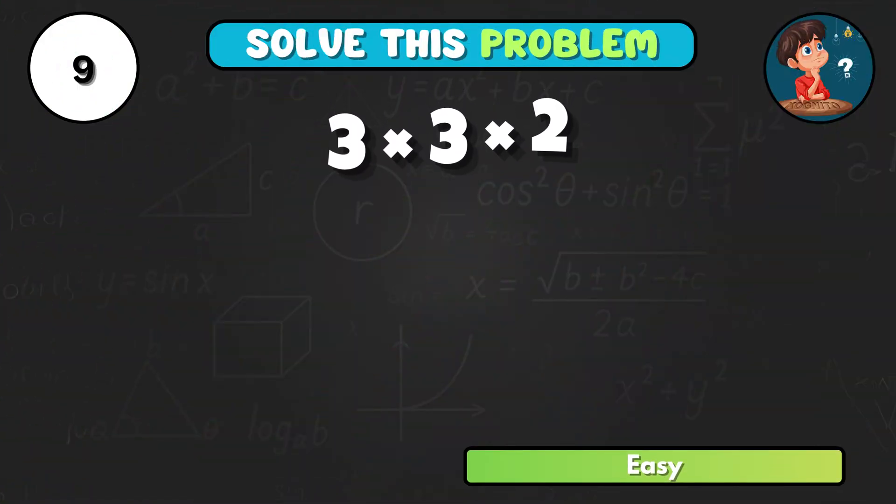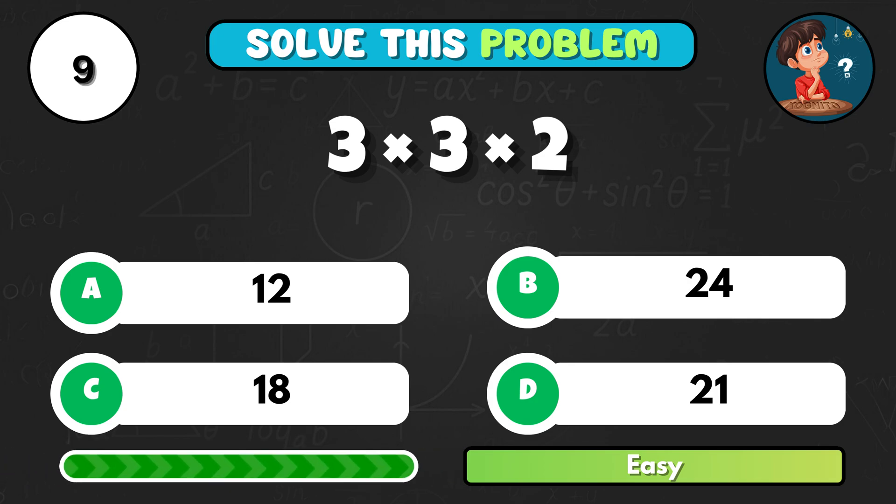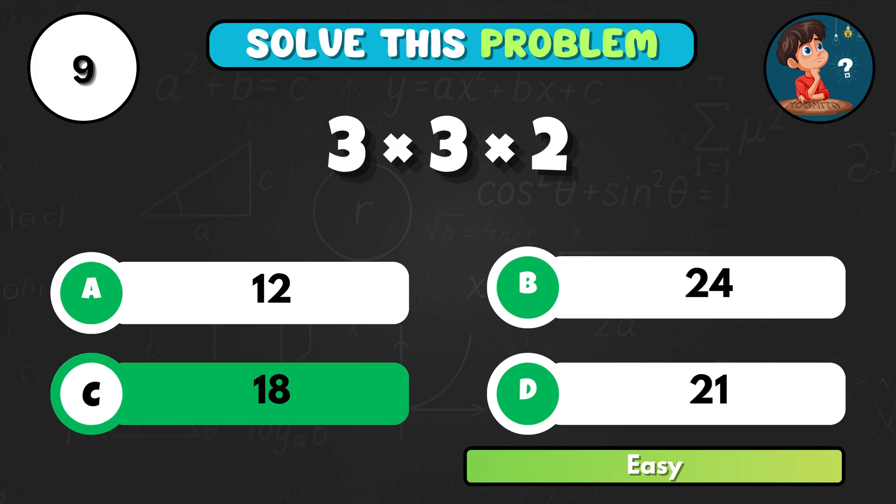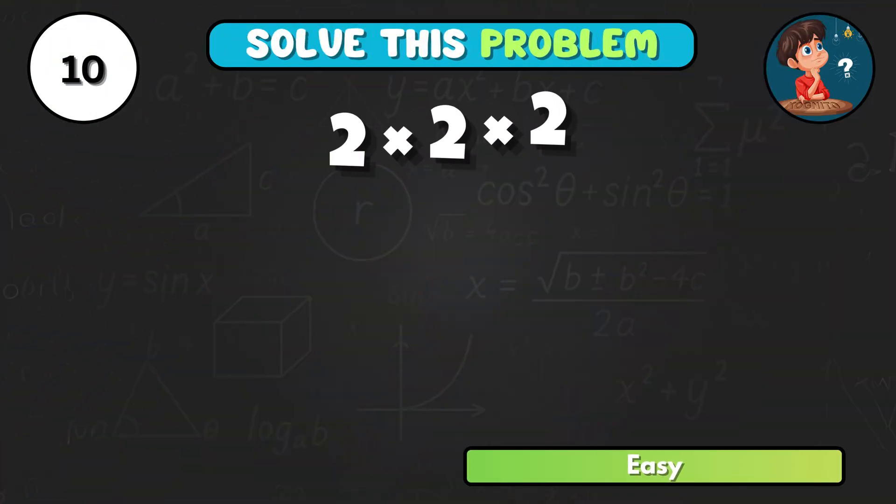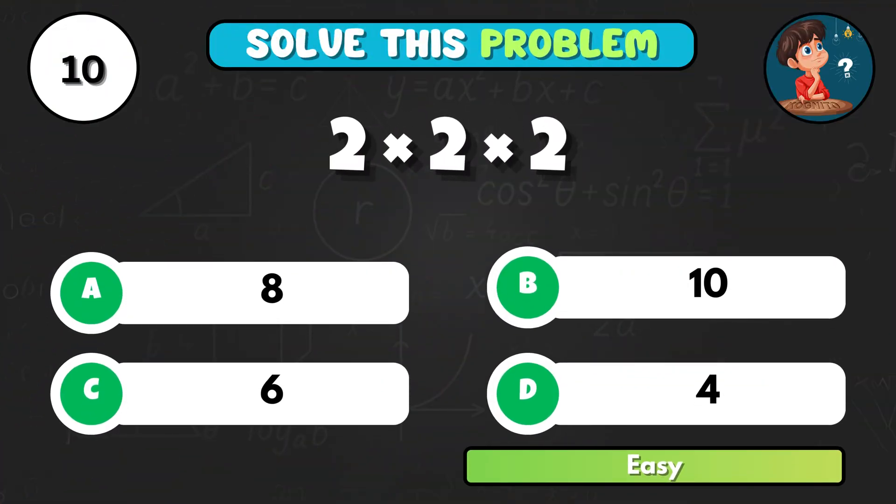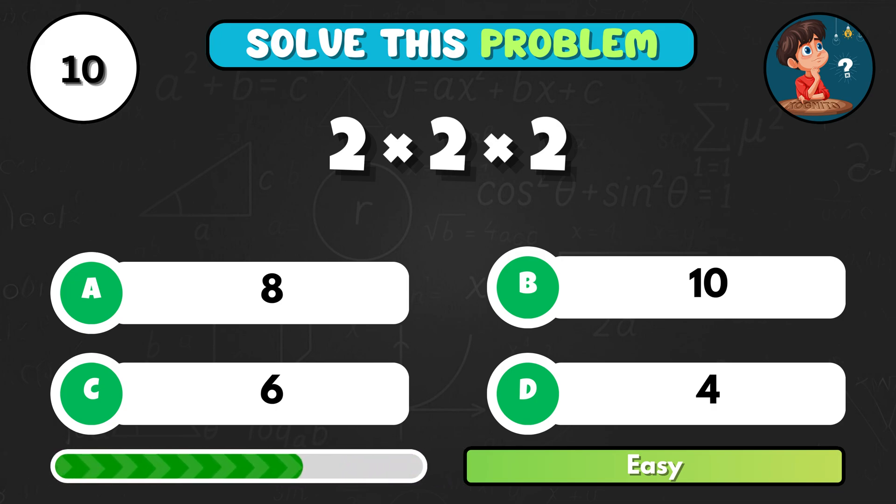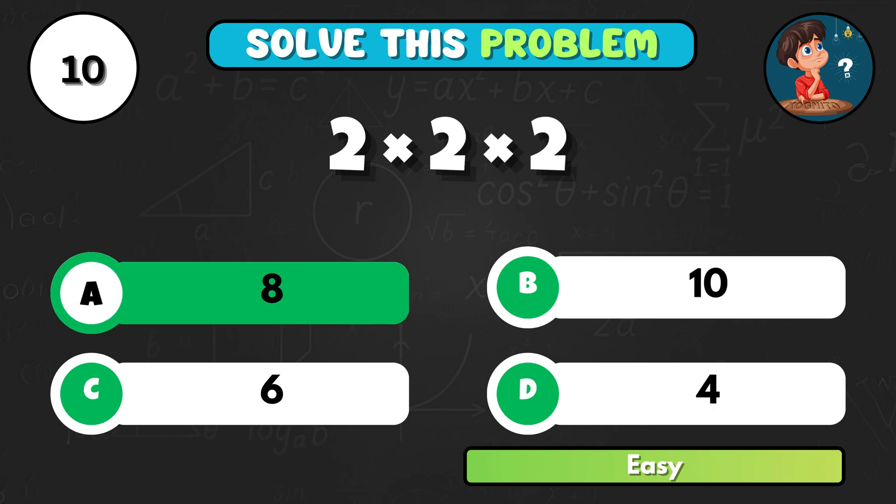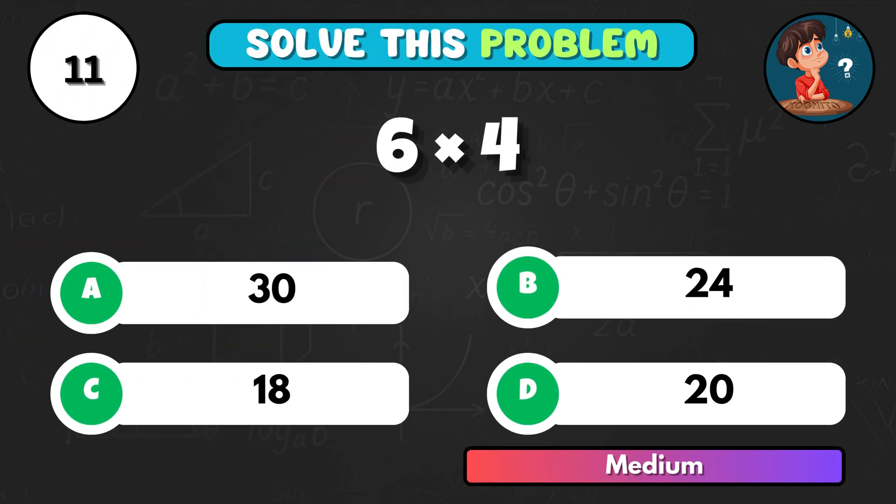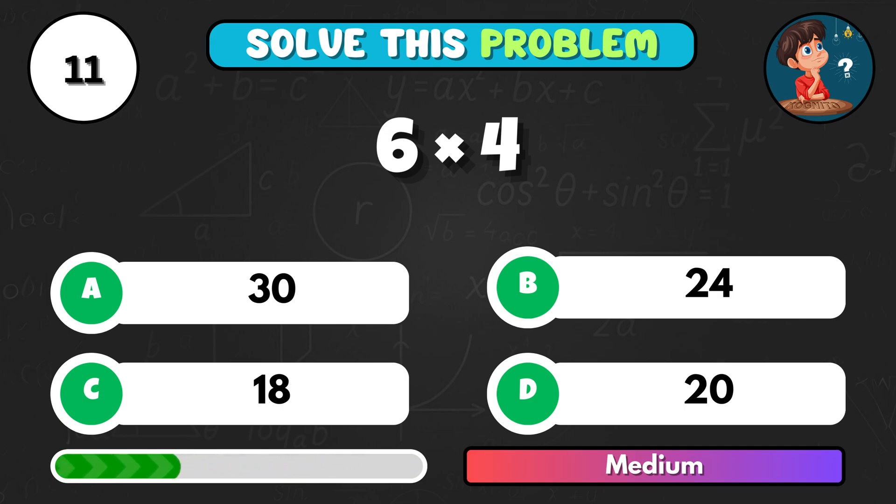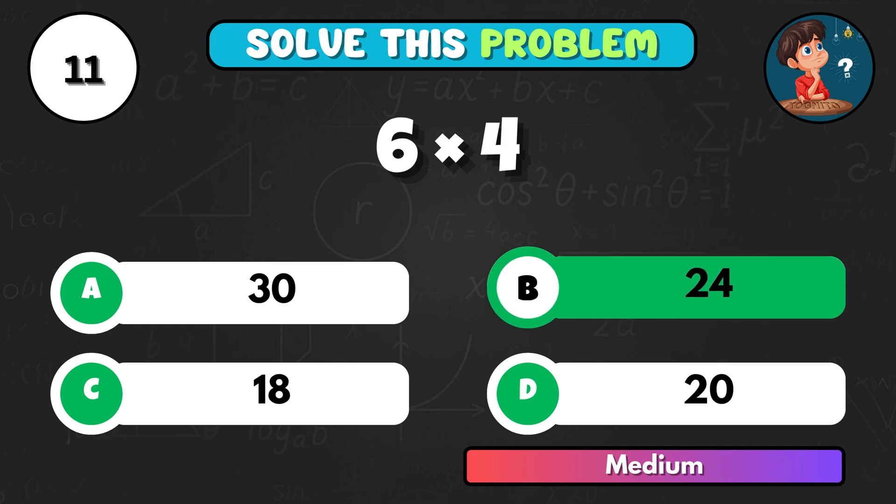Let's go faster. 3 times 3 times 2 equals what? That's C, 18. Small numbers. 2 times 2 times 2. It equals A, 8. Now a little harder. What's 6 times 4? That's B, 24.